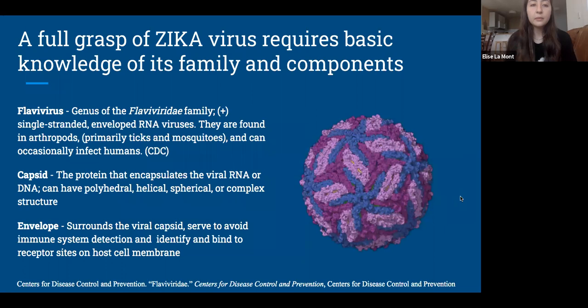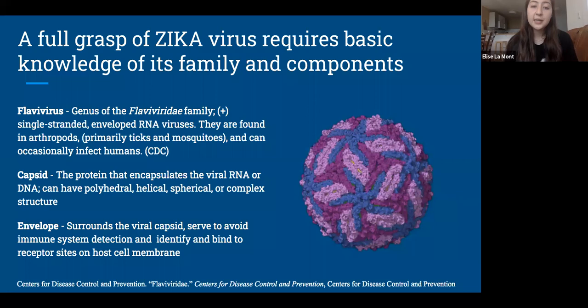We also need to cover some definitions. Zika virus is a flavivirus. A flavivirus is a virus of the genus of the Flaviviridae family. They are plus-sense, single-stranded, enveloped RNA viruses found in arthropods — primarily ticks and mosquitoes — and can occasionally infect humans. The capsid is the protein that encapsulates the viral RNA or DNA; it can have many shapes including polyhedral, helical, spherical, or complex structures. The envelope surrounds the viral capsid and serves to avoid immune system detection and bind to receptor sites on the host cell membrane.